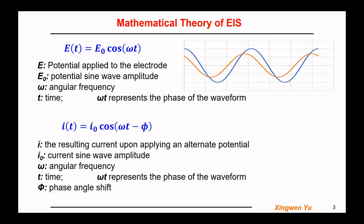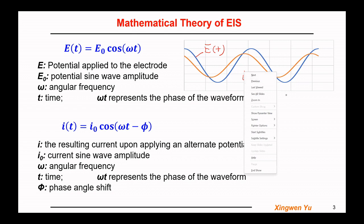On this slide, I put a figure here. The blue line is the alternating potential applied E(t). The orange line is the resulting corresponding current response with the same frequency as the applied potential, but with a phase angle change. This phase angle change can be expressed with phi (φ).